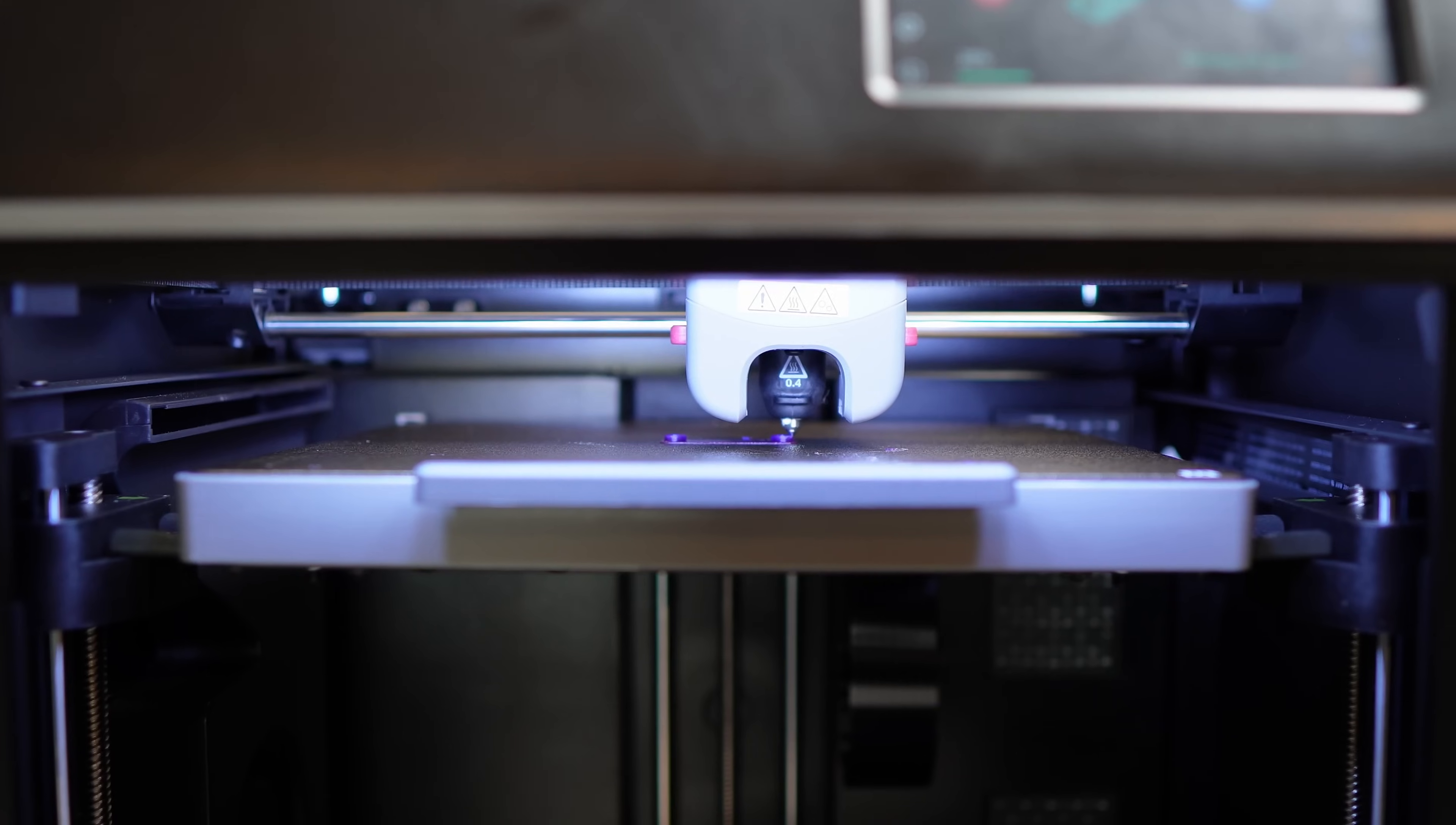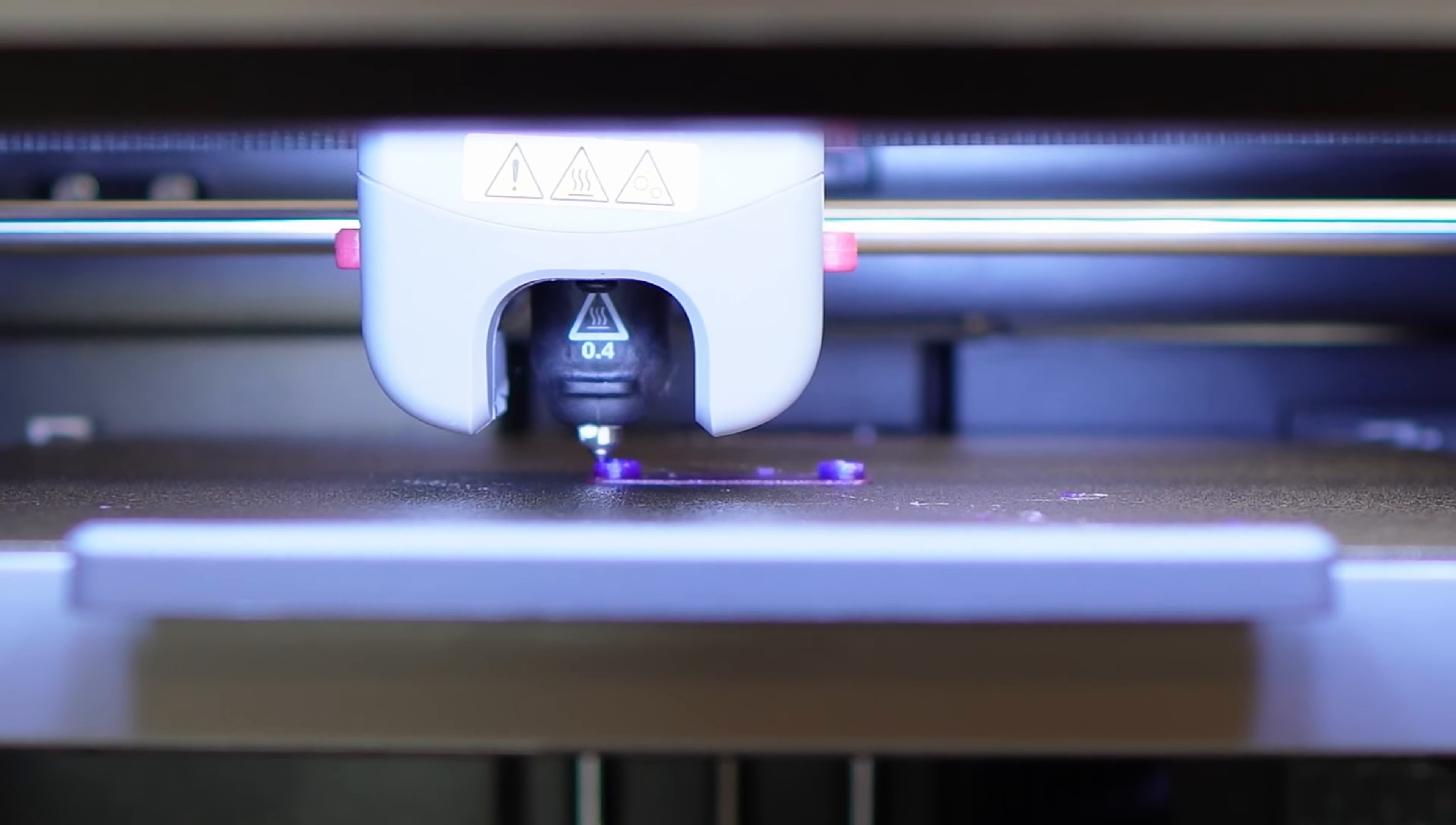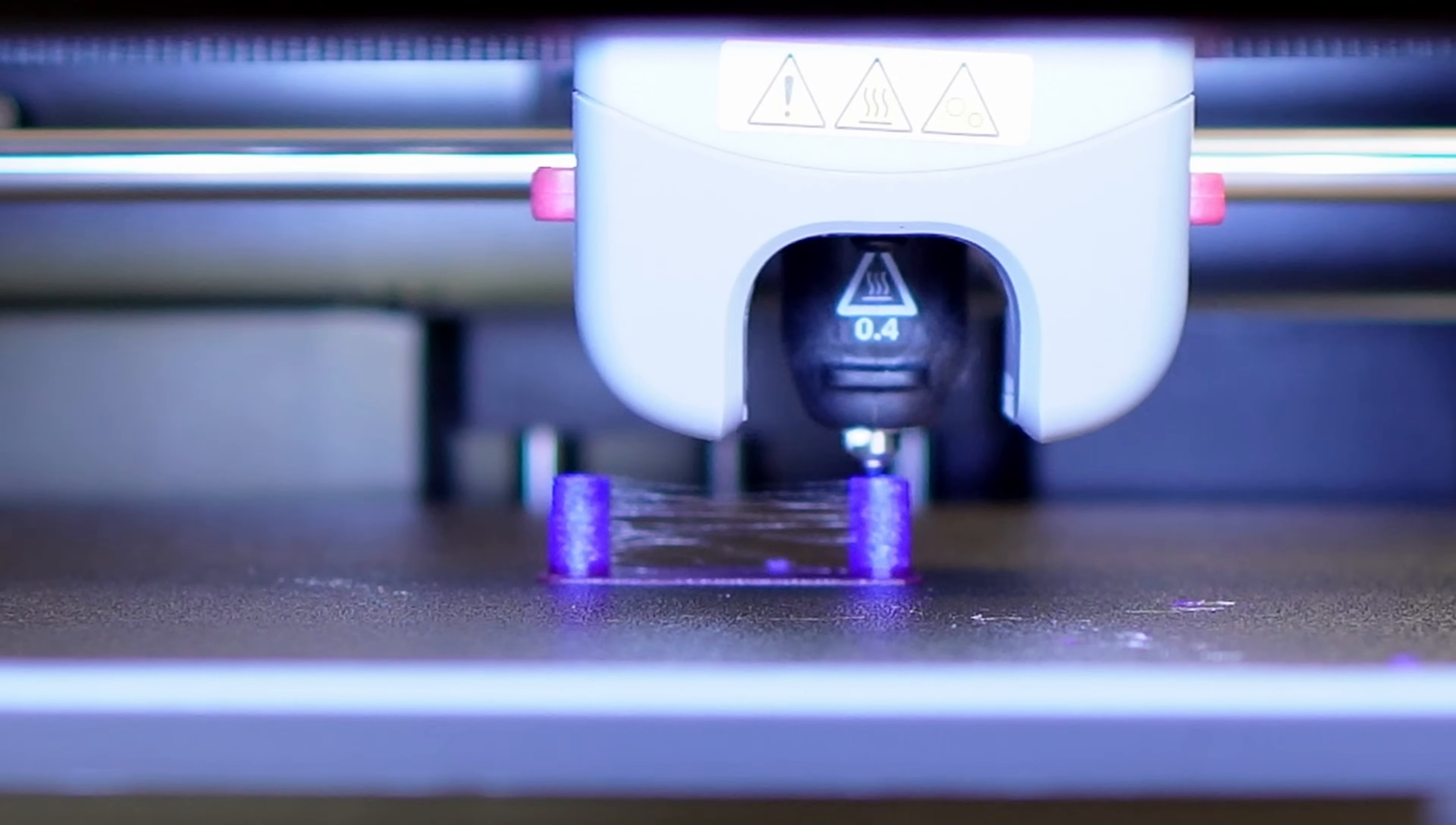I just realized something. Notice how the bed moves down every time the printhead travels left and right? That's a feature called Z-hop. If you're unfamiliar with this feature, it basically lifts the nozzle above the print surface every time there's a retraction or a layer change depending on your settings. I believe this could be the issue.